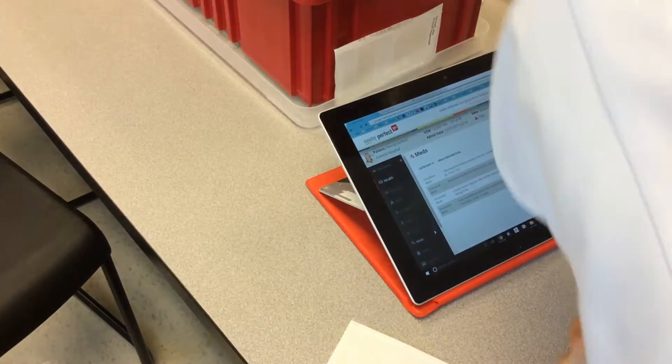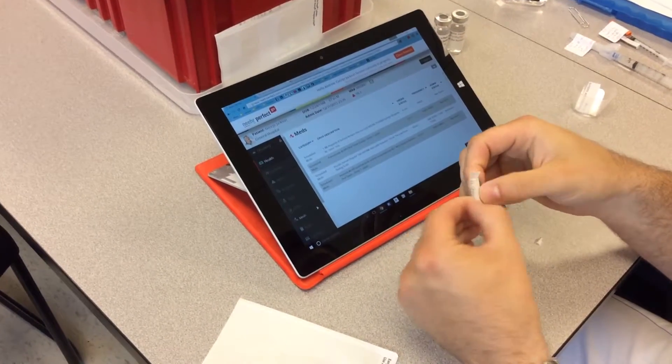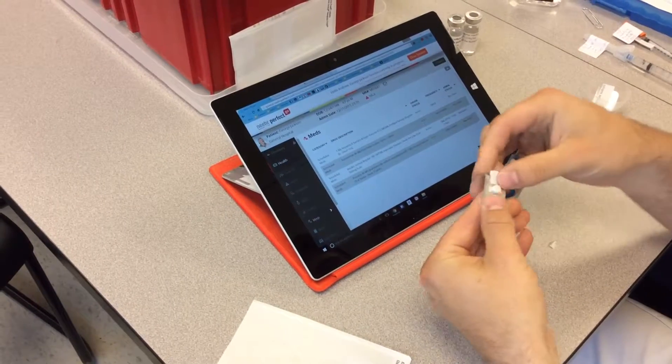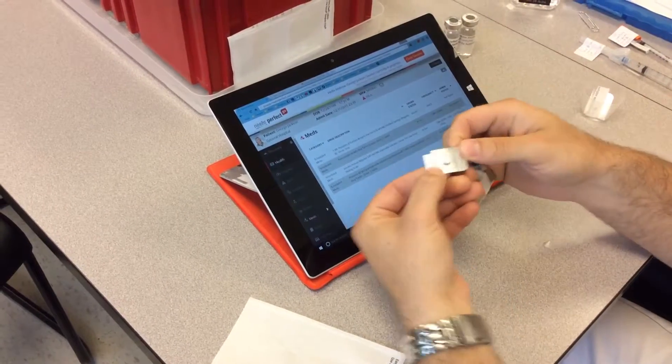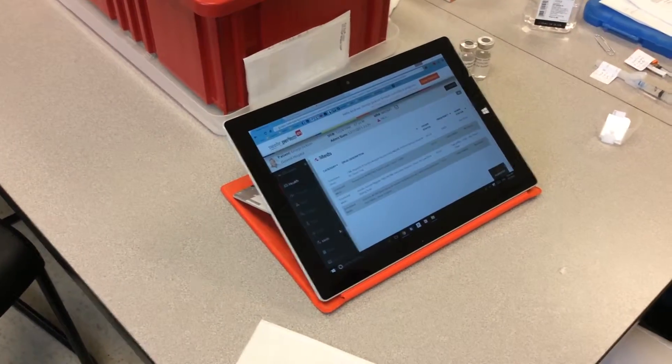The other one is furosemide, which is also 40 milligrams. I'll check to make sure the expiration date is still valid. It's 40 milligrams, which is his dose, so I don't need to do anything with that. The case is still intact. Now I'm going to do my second check.